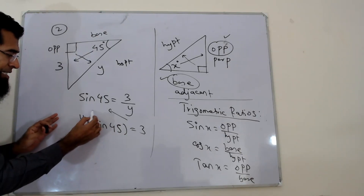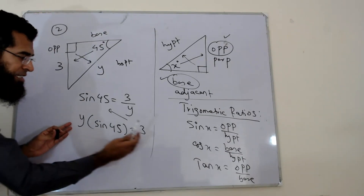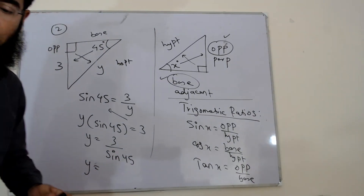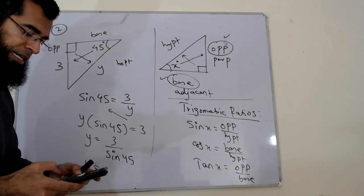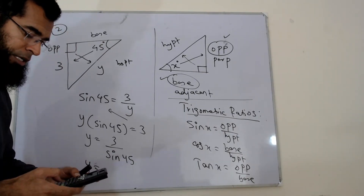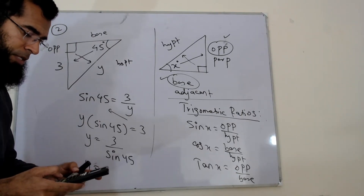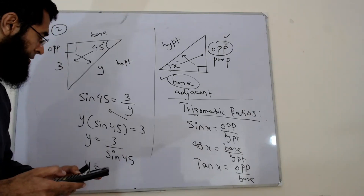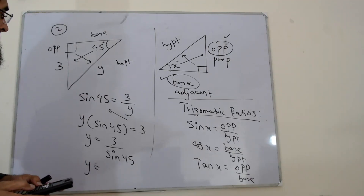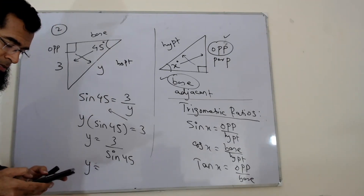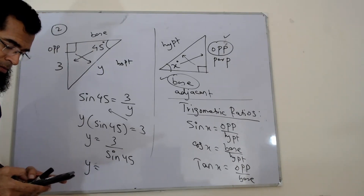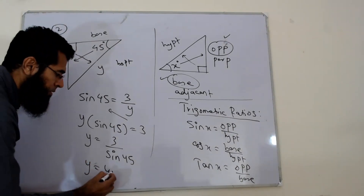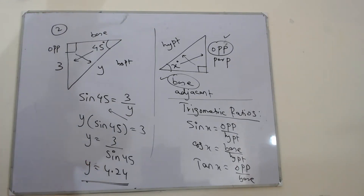So now these are multiples — sin 45 is a number, so y equals 3 over sin 45. Using a calculator: 3 divided by sin 45 gives 4.24. So y = 4.24 to 3 significant figures. That is how you find the length.